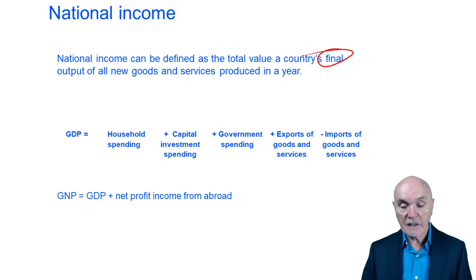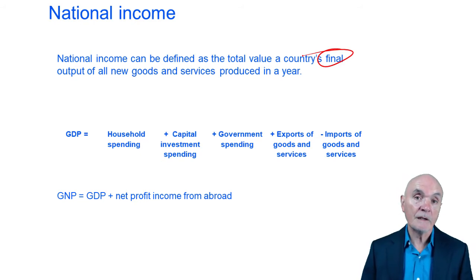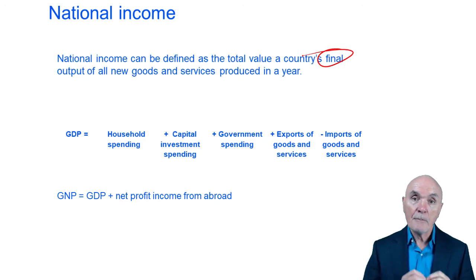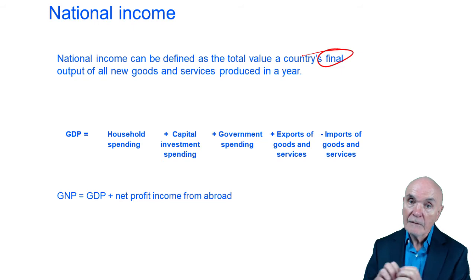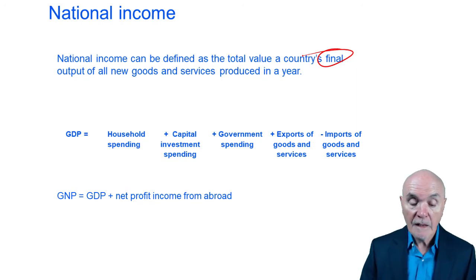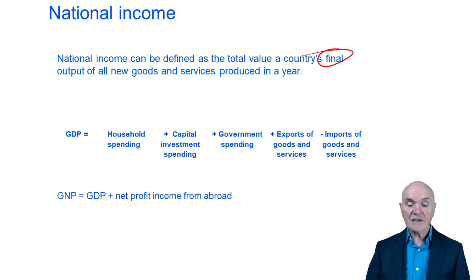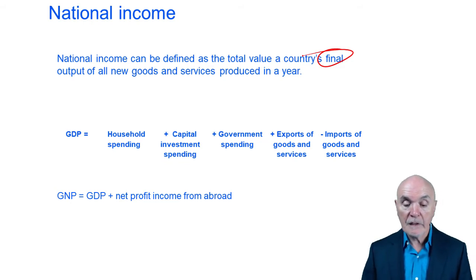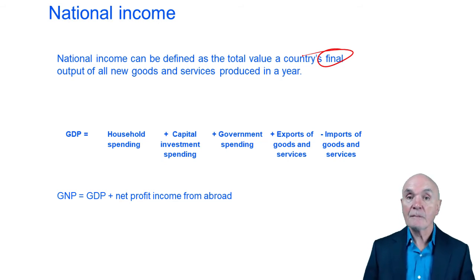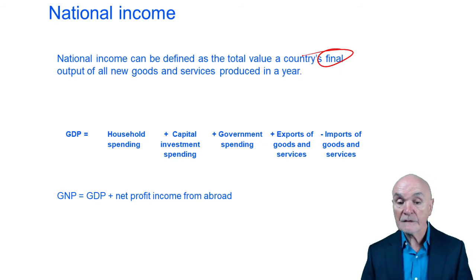That comes into national income. Exports — export is money coming in from abroad. But note that imports of goods and services are essentially money leaking out of the economy as it goes to foreign suppliers. This gives us a gross domestic product. And the gross national product is gross domestic product plus profit income from abroad — so if a company had a foreign subsidiary and has paid dividends, that becomes part of the gross national product.